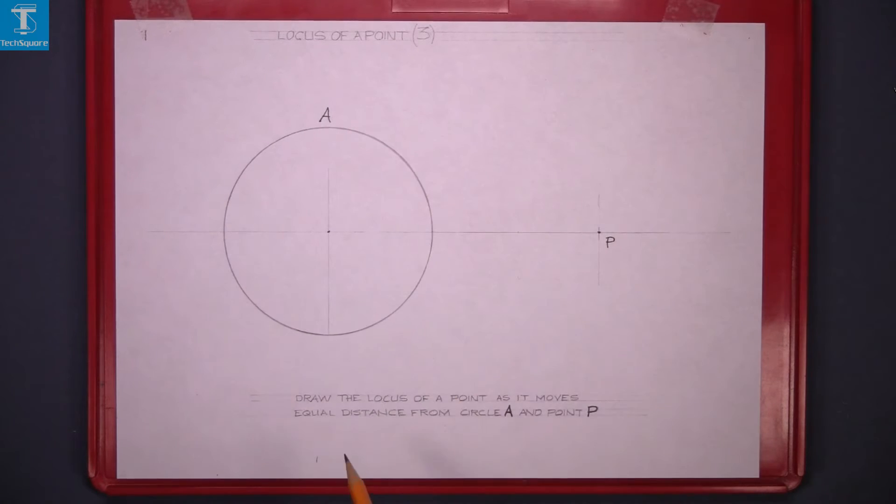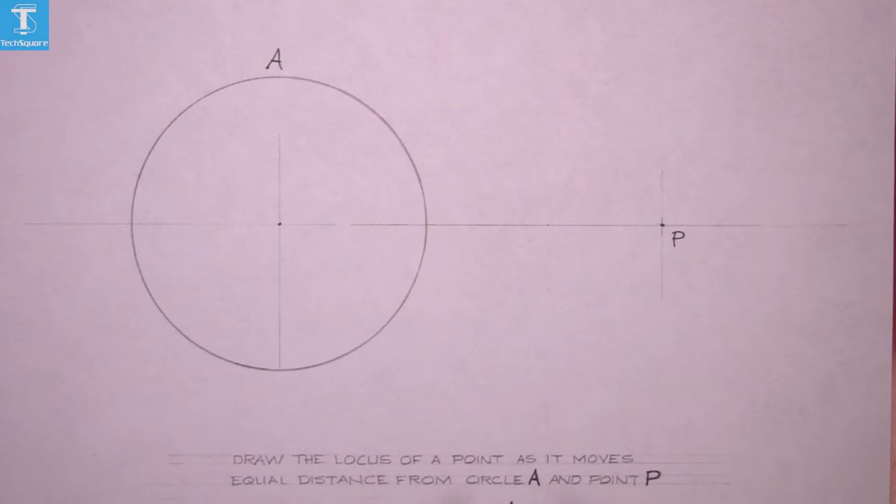Locus of a point tree, sheet tree. Draw the locus of a point as it moves equal distance from circle A and point P.